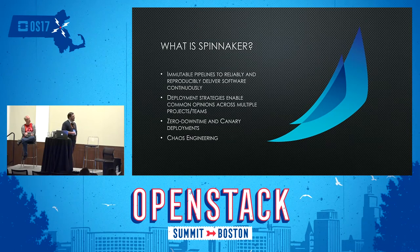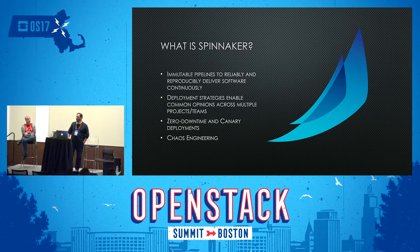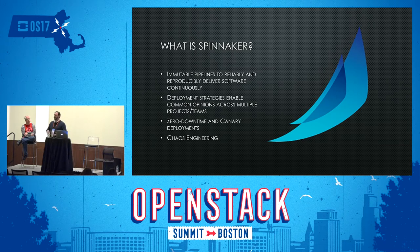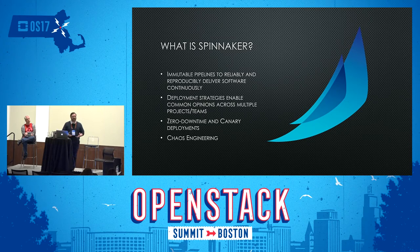Last but not least is chaos engineering. The new version of Chaos Monkey only runs through Spinnaker, and Spinnaker's ability to run pipelines and act as a pipeline executor really facilitates that. Having Spinnaker in your infrastructure means you're immediately set up to succeed with this kind of failure injection testing.